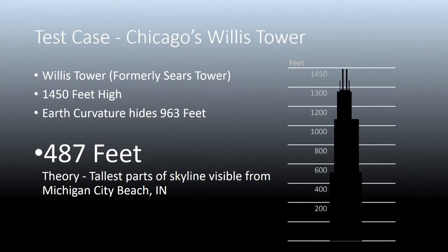Chicago's Willis Tower is 1,450 feet high. If you subtract the curvature of the Earth — 963 feet — from 1,450 feet, you get 487 feet of the tower that should be visible. Anything below that should not be visible. Is this what we see?